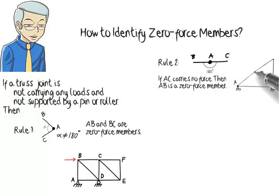Consider the two members AB and BC. If the force in member AB is zero, since the members are collinear, BC is also a zero-force member.